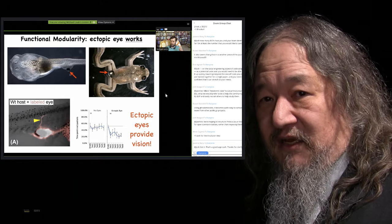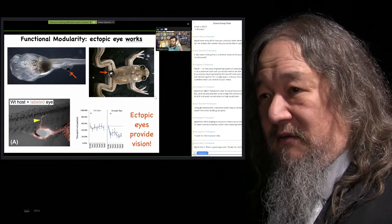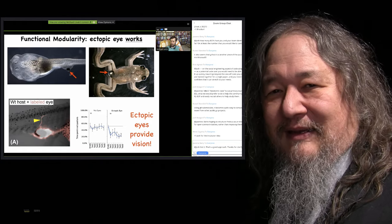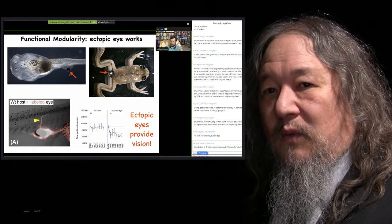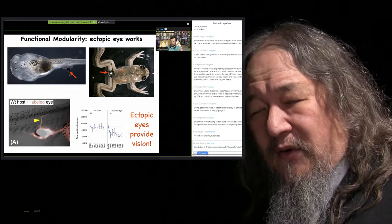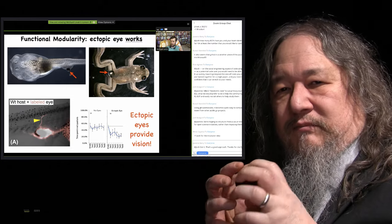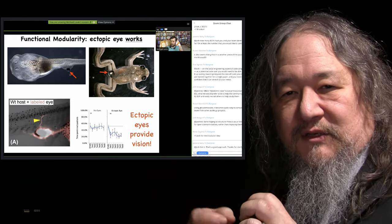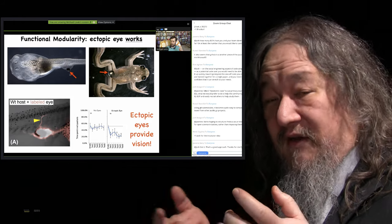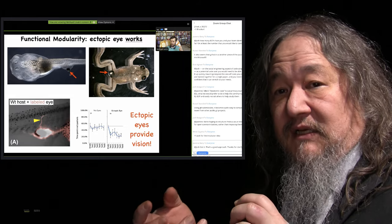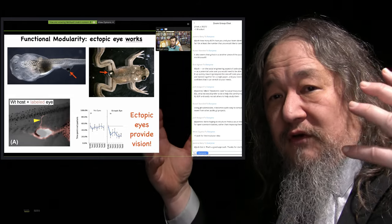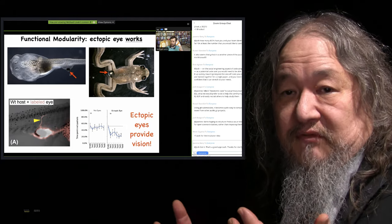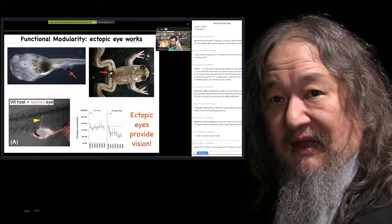you can take embryonic eye cells and graft them onto a tadpole's butt, and it will grow into an eye that works. How? Because the eye cells put out an optic nerve. The optic nerve cells look for the brain that they're supposed to hook onto. Don't find it. Find the spinal cord. Make active synapses onto the spinal cord. And the whole nervous system eventually adapts to use those signals so that the eye is providing information about lighting behind you.